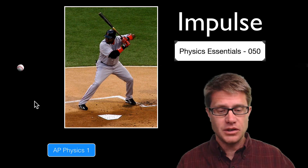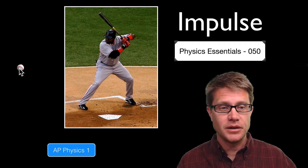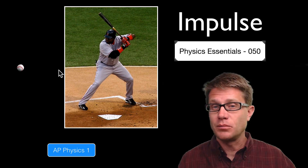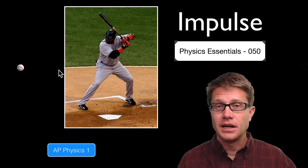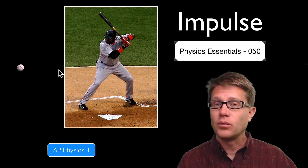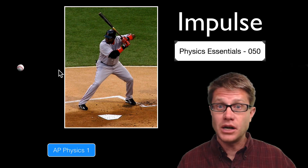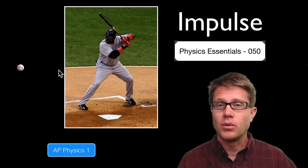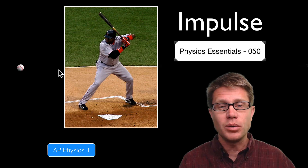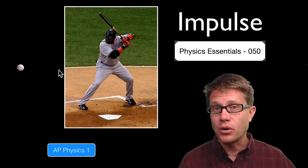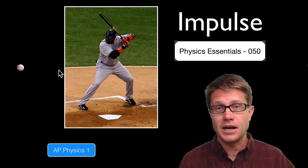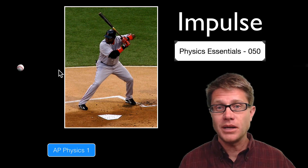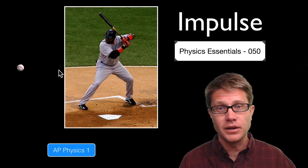Imagine we have a baseball here that is moving from the left towards the right, so it has momentum towards the batter. And let's say he hits it. What is going to happen to the momentum? It is going to change dramatically — it is going to go in the opposite direction. What is causing that is the impulse; the bat is applying a force over a given period of time.